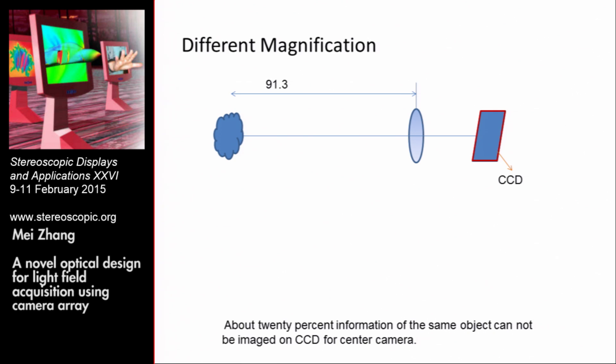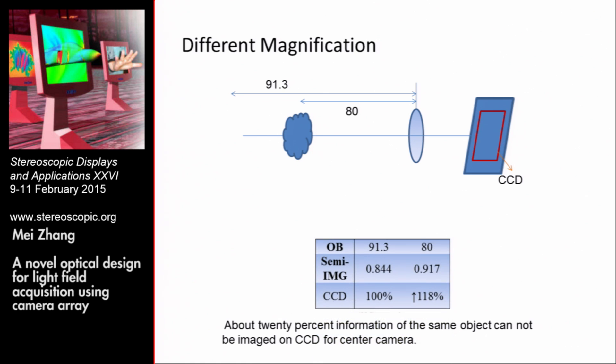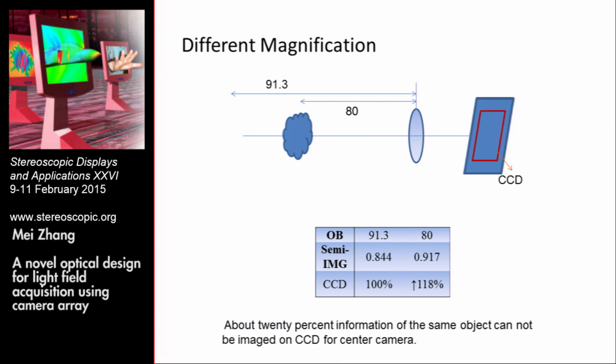We then applied the optical system to all cameras. But a problem arose: if we use it for the center camera, the objective distance is set as 80 millimeters. As a result, the size of the image becomes larger and overflows beyond the range of the sensor. The detailed values show that about 20% of the information of the same object cannot be imaged on the center camera.